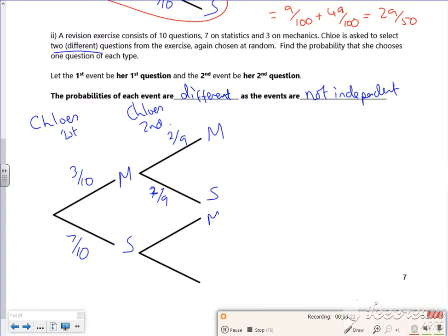If she chooses stats on the first one, I'm still okay with my 3 out of 9 now. But the stats drops down to 6 out of 9. So I've chose the stats question, the stats question has now got less choices.